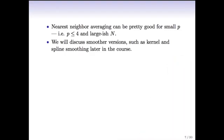Nearest neighbor averaging can be pretty good for small p, small numbers of variables - maybe p ≤ 4 and large-ish n. We want large n so we have enough points in each neighborhood to average to give us our estimate. This is just one version of a whole class of techniques called smoothers, and we're going to discuss later in this course much cleverer ways of doing this kind of averaging, such as kernel and spline smoothing.